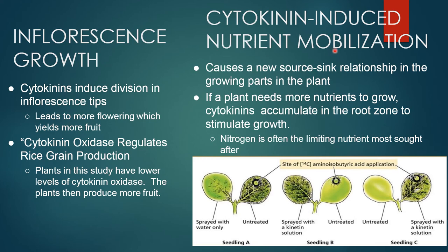Cytokinin-induced nutrient mobilization causes a new source-sink relationship in the growing part of the plant. If the plant needs more nutrients to grow, cytokinins accumulate in the root zone to stimulate growth. Nitrogen is often the limiting nutrient most sought after.